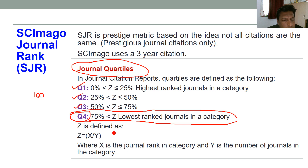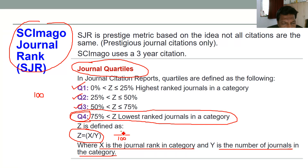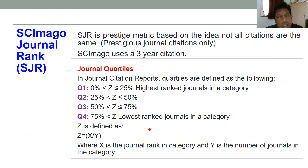Mathematically, if you want to understand how these percentages are calculated, the formula is Z = X / Y, where X is the journal rank in that category and Y is the number of journals in that category. For example, if there are 100 journals in material science and the ranking of a journal according to Scimago Journal Rank is 1, then Z = 1/100 = 1%, meaning that journal is in the Q1 category. If the rank of a journal is the bottom-most, then it falls under Q4 category.